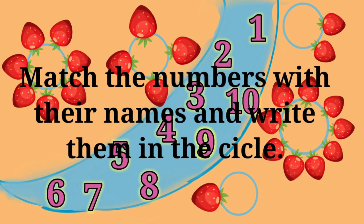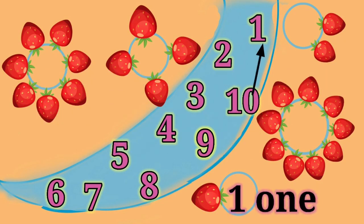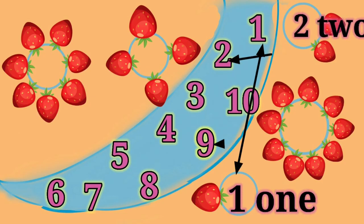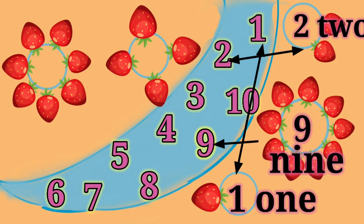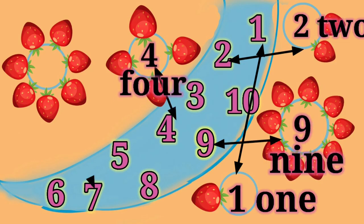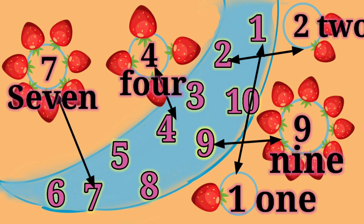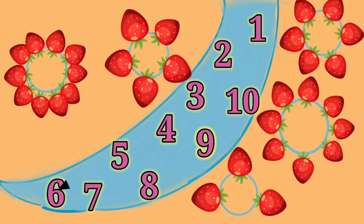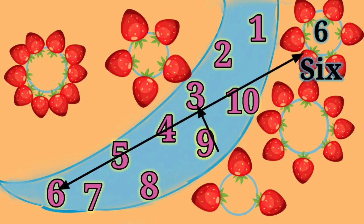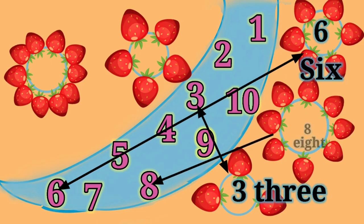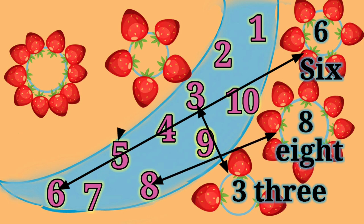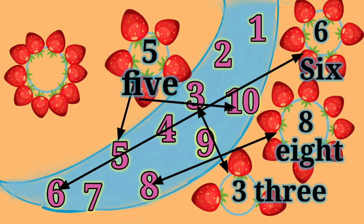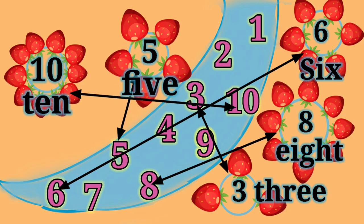Now, match the numbers with their names and write them in the circle. 1, 2, 9, 4, and 7. Very good. Now look at the remaining numbers: 6, 3, 8, 5, 10. Like this, we have matched all the numbers with their names.